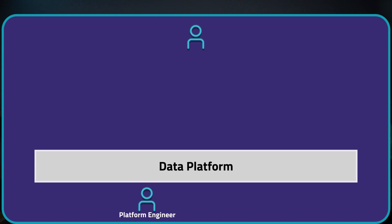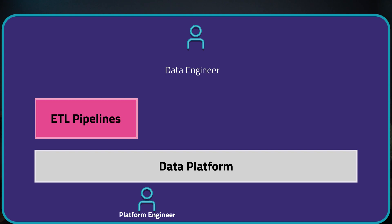Data engineers are closest to the data sources. Their primary role is extract, transform, and load of data. This process can be done in a variety of coding languages, most commonly Python, or it can be an ETL tool with connectors to common sources. The pipelines may include lots of data cleaning and may involve batch loading or streaming. There will likely be many ETL processes making up the pipelines, so they need to have knowledge of orchestrators and patterns.